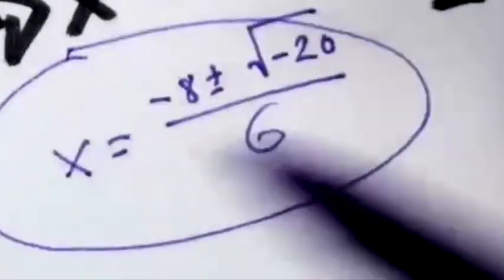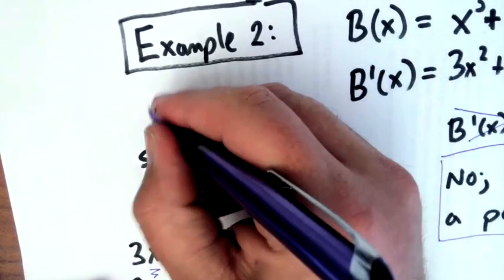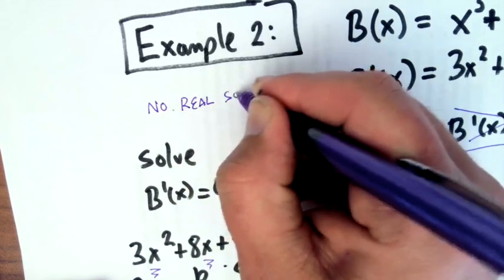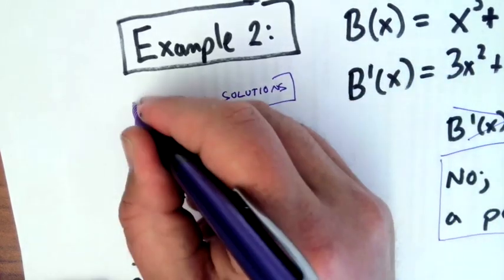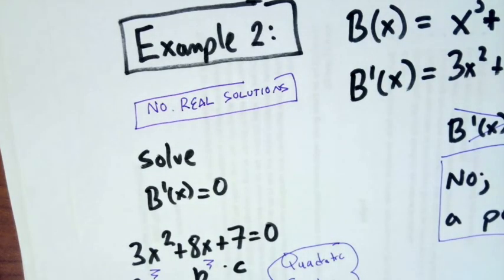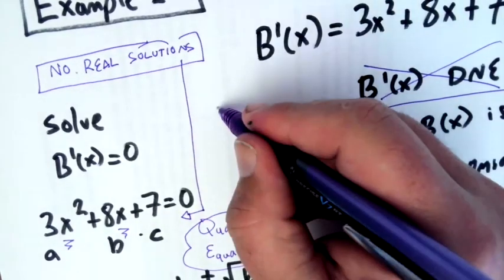So there are no real solutions here. We don't have things that involve imaginary numbers on our graph. And the whole place that we started this was saying it has to be on the graph. What that means is this graph doesn't have any critical points.